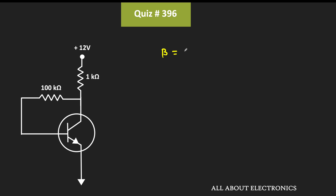The current gain beta is equal to IC divided by IB. So to find the value of beta, first of all let us find the relationship between the collector current and the base current. We have been given that the collector-to-emitter voltage VCE is equal to 5.2 volt.